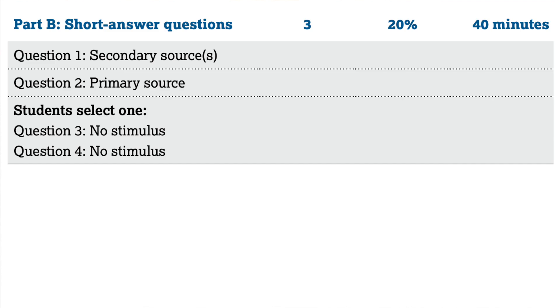We'll get more into that the week of the exam. Question one will be from a secondary source. Question two will be from a primary source. Then, curveball, you get a choice between question three and question four, both of which will not have a stimulus. This part is 40 minutes, so for each question that's about 13 minutes. For each A, B, or C section, that's about three minutes, so keep moving.